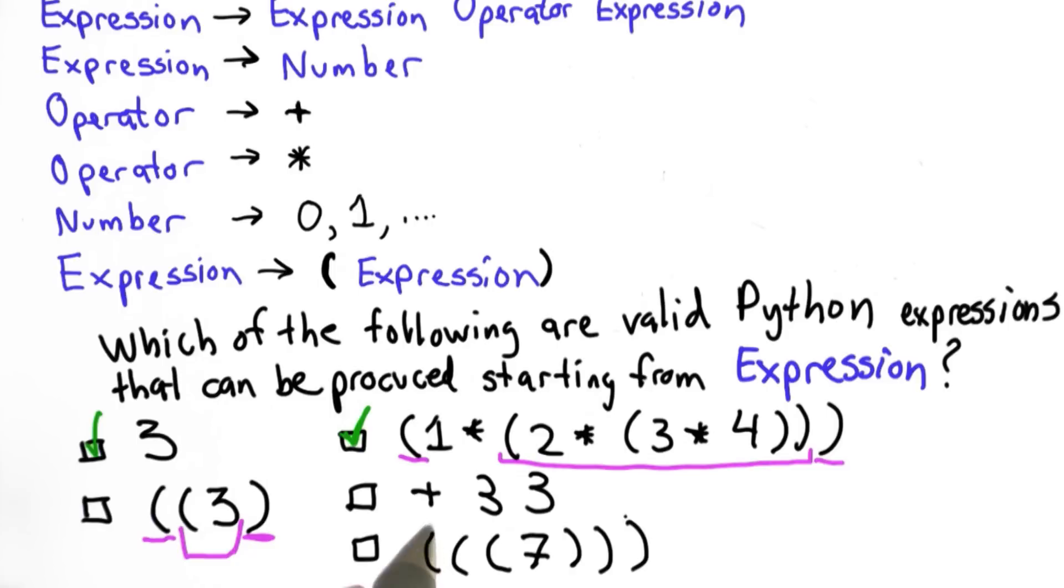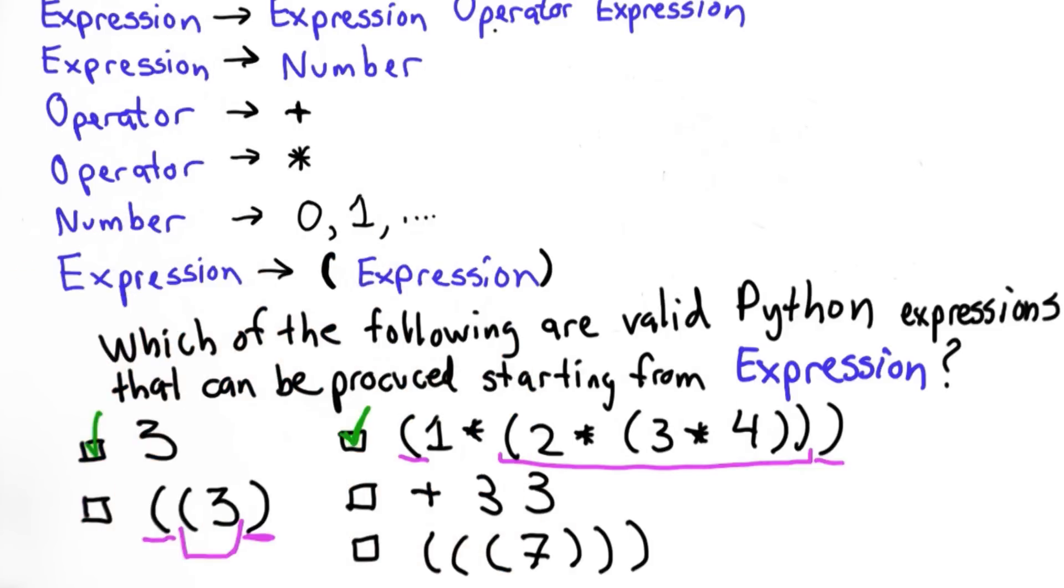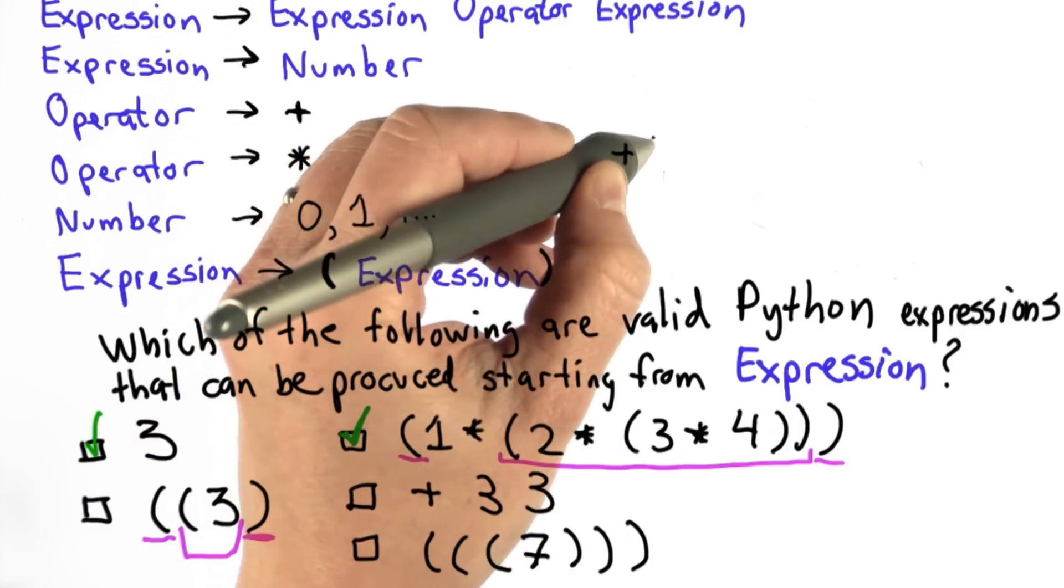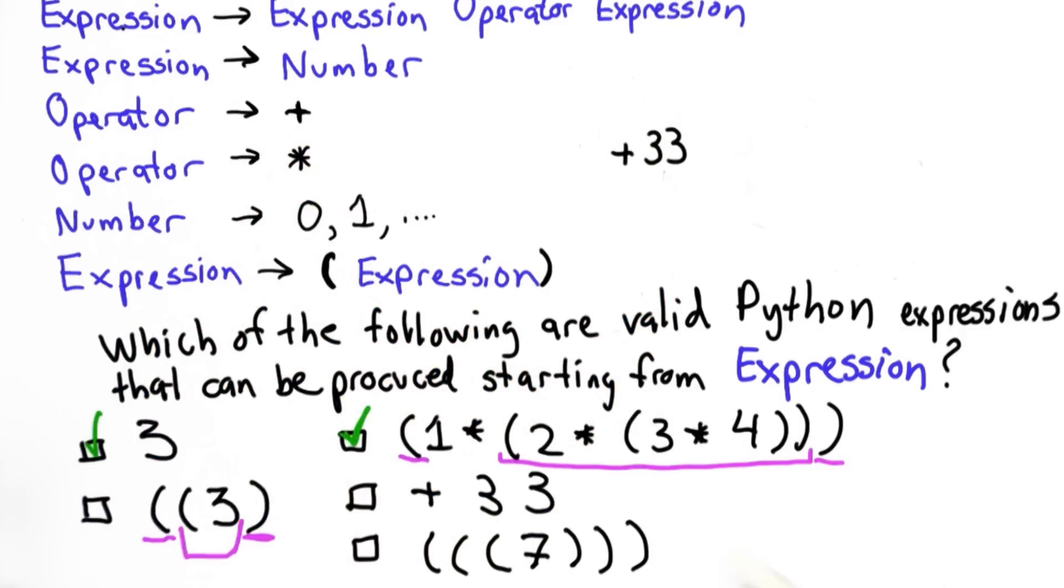So the fourth possibility is not a valid expression. There's no way that we can get an operator in front with this rule. There actually are rules in Python that allow us to have an expression go to operator expression, but we have two expressions here. If there's a 3 space 3. If it was just the number 33, this would actually be a valid Python expression, not something that we can produce with this grammar though.